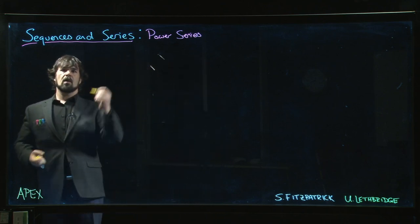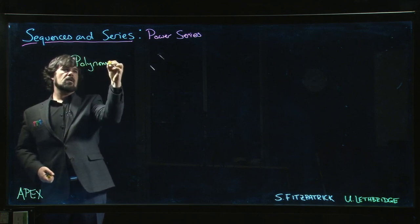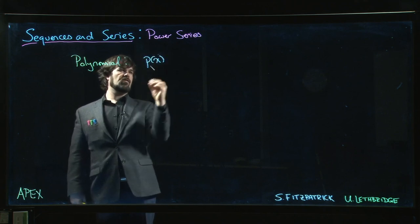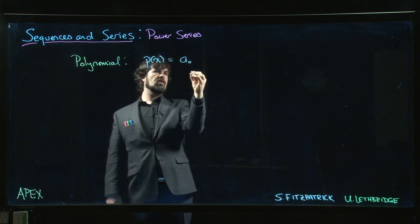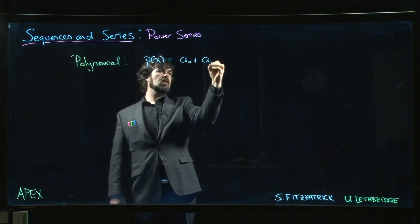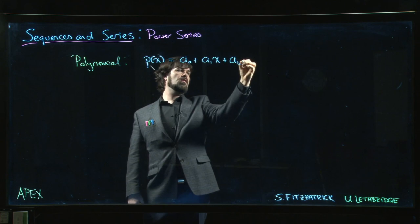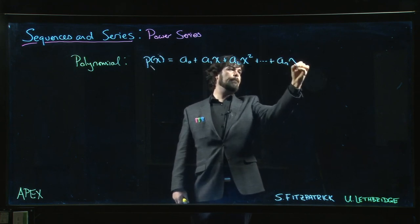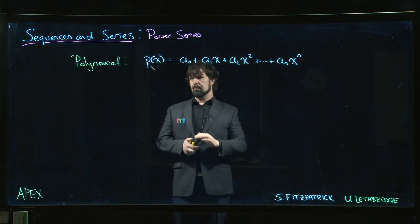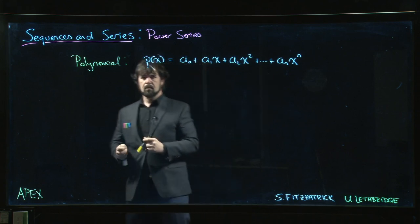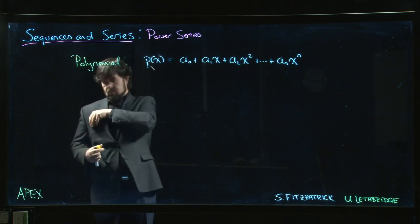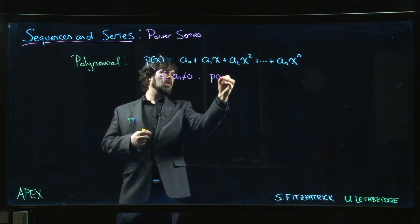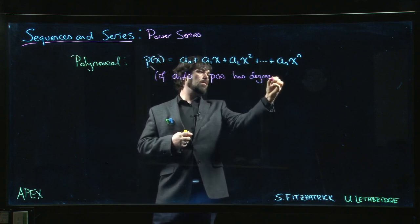Before we get into power series, let's start with a reminder of what a polynomial looks like. If I have a polynomial function p(x), there could be a constant term — some number a-naught — a linear term a₁ times x, possibly a quadratic term a₂x², and so on up to some highest power. A polynomial always terminates — there's always a maximal power. Assuming aₙ is nonzero, we say p(x) has degree n.